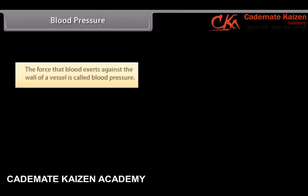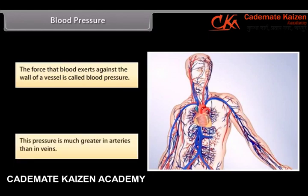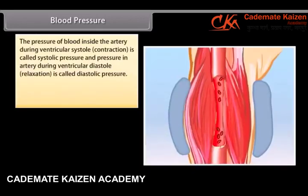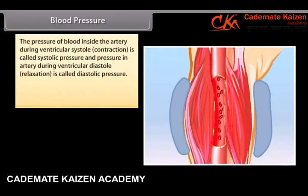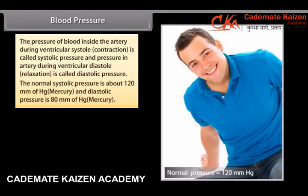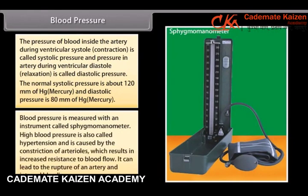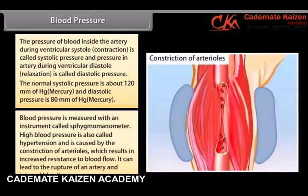Blood pressure is the force that blood exerts against the wall of a vessel. This pressure is much greater in arteries than in veins. The pressure of blood inside the artery during ventricular systole (contraction) is called systolic pressure, and pressure in the artery during ventricular diastole (relaxation) is called diastolic pressure. The normal systolic pressure is about 120 mm of mercury and diastolic pressure is up to 80 mm of mercury. Blood pressure is measured with an instrument called a sphygmomanometer. High blood pressure is called hypertension and is caused by the constriction of arterioles, which results in increased resistance to blood flow. It can lead to the rupture of an artery and internal bleeding.